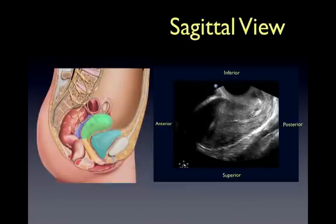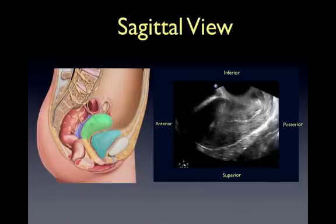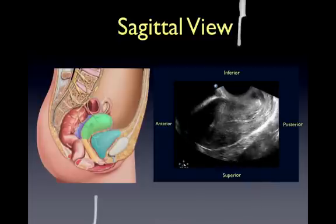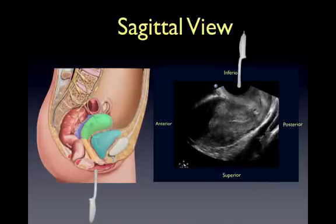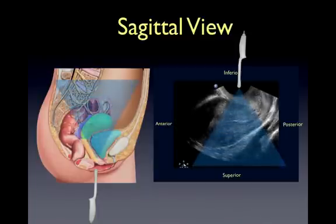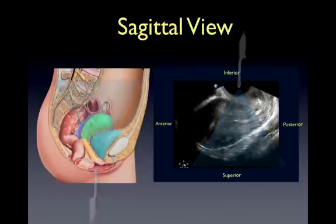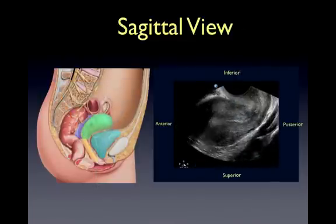Here's a cartoon to help better orient yourself anatomically. The probe is entering at the level of the cervix, and because whatever is closest to the probe's footprint is at the top of the screen, the cervix is visualized at the top of the screen. For this reason, the structures we see on a transvaginal ultrasound will be upside down.